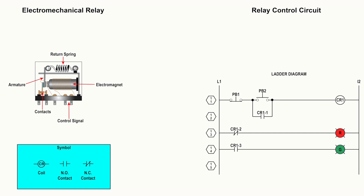Relays will usually only have one coil but may have multiple contacts. They have a NC, normally closed, and a NO, normally open, contact.